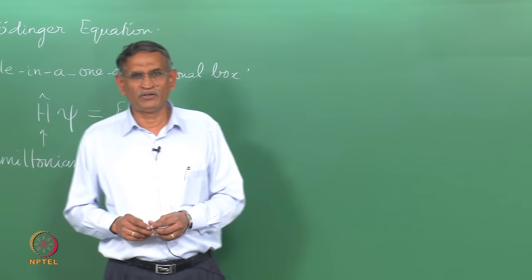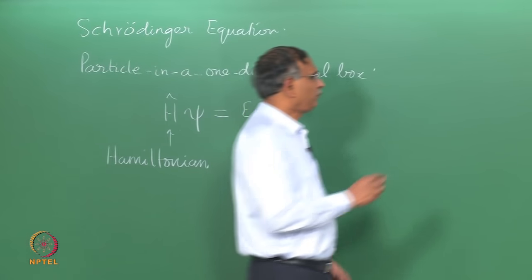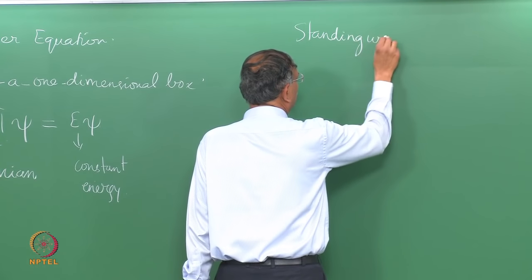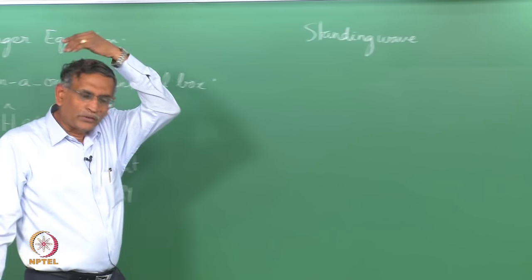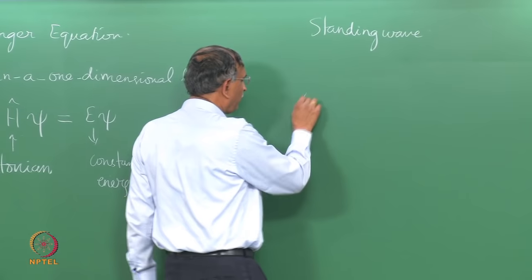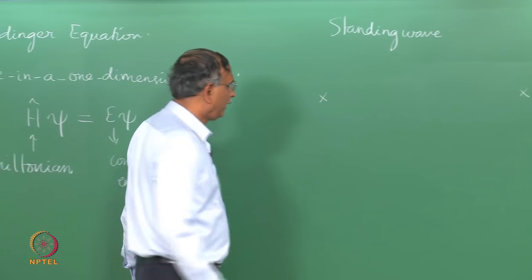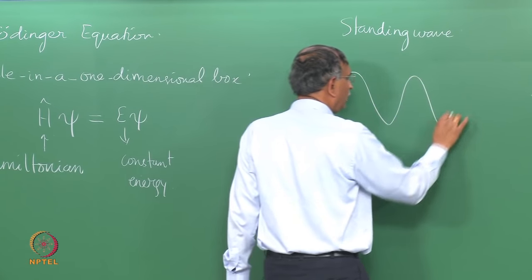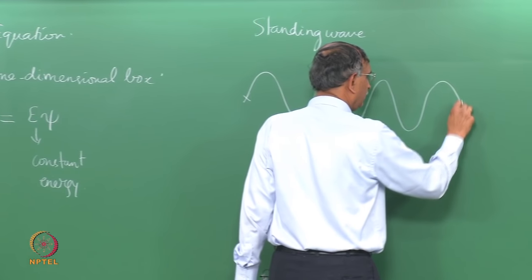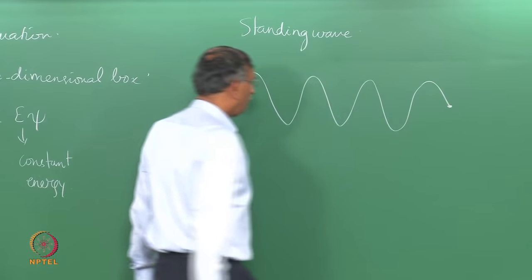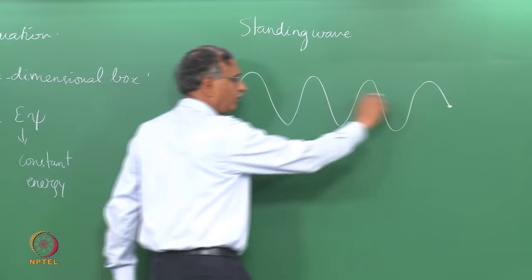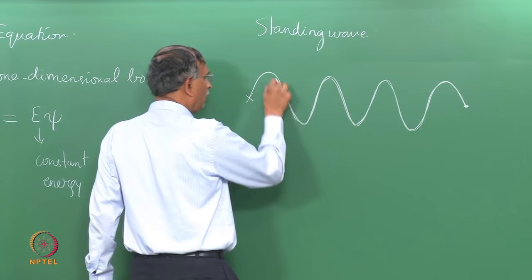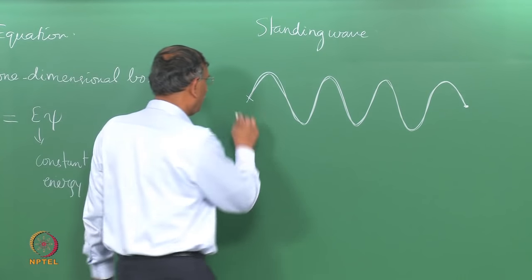We can do a very simple example of a standing wave. A standing wave is something that happens between fixed points — the wave motion of a particle fixed at the ends. When it reflects it still follows the same form, and therefore the standing wave remains as a wave and the amplitudes do not cancel each other.